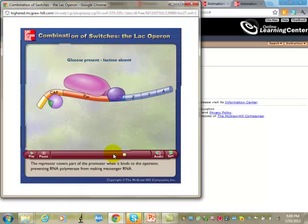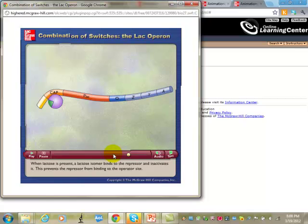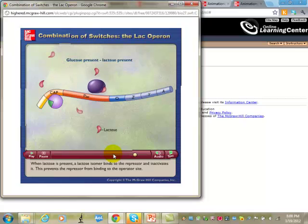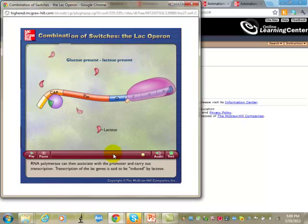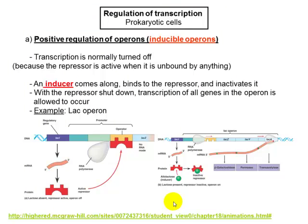The repressor covers part of the promoter when it binds to the operator, preventing RNA polymerase from making messenger RNA. When lactose is present, a lactose isomer binds to the repressor and inactivates it, preventing the repressor from binding to the operator site. RNA polymerase can then associate with the promoter and carry out transcription. Transcription of the lac genes is said to be induced by lactose — and allolactose is the inducer.